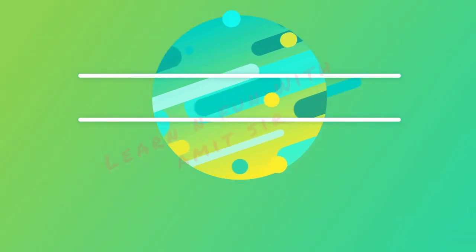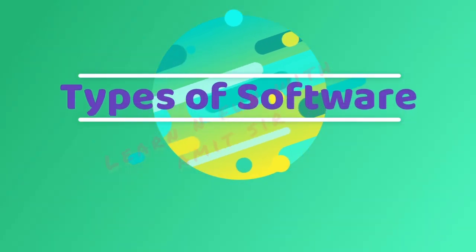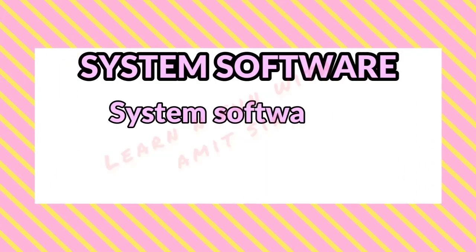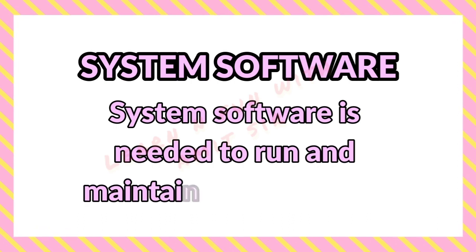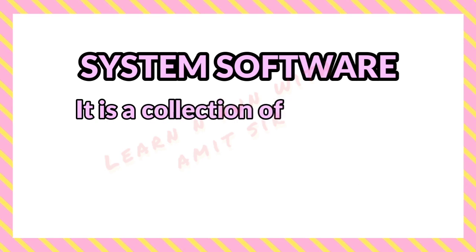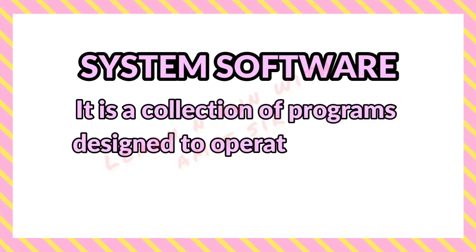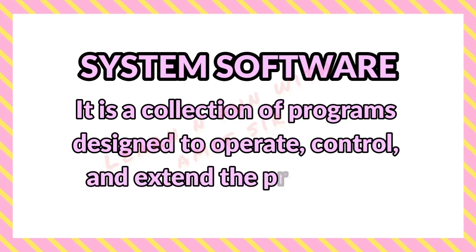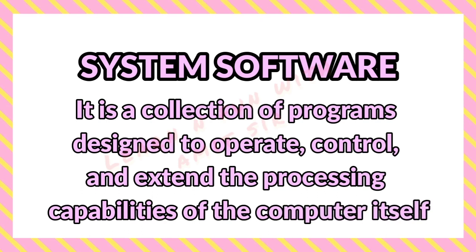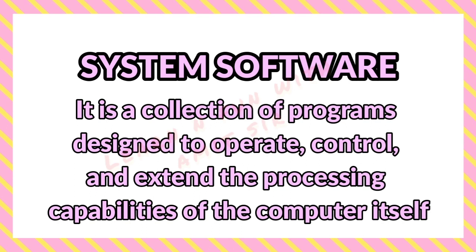Now let's talk about the various types of computer software. There are mainly two types: system software and application software. System software is needed to run and maintain the computer. It is a collection of programs designed to operate, control, and extend the processing capabilities of the computer itself. These software directly interact with the hardware.